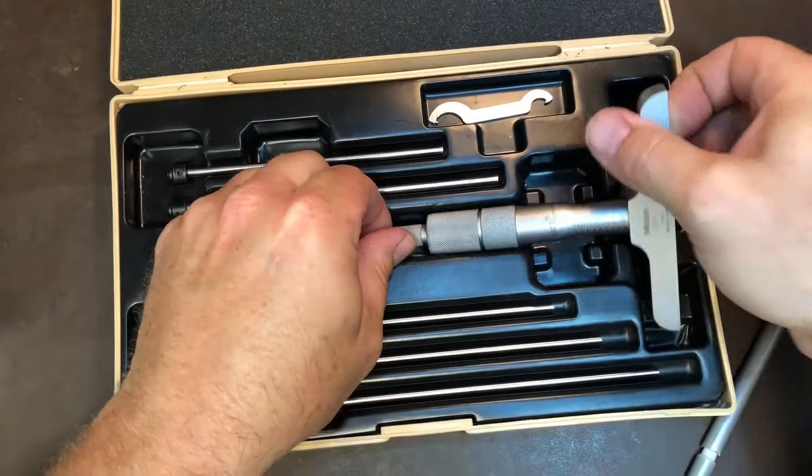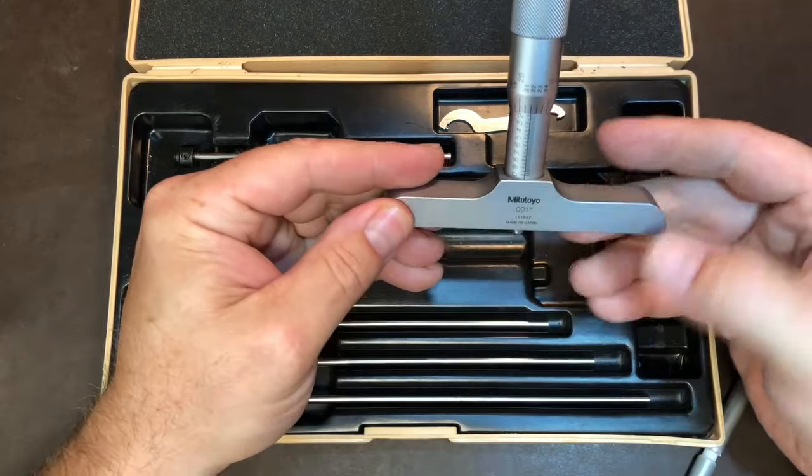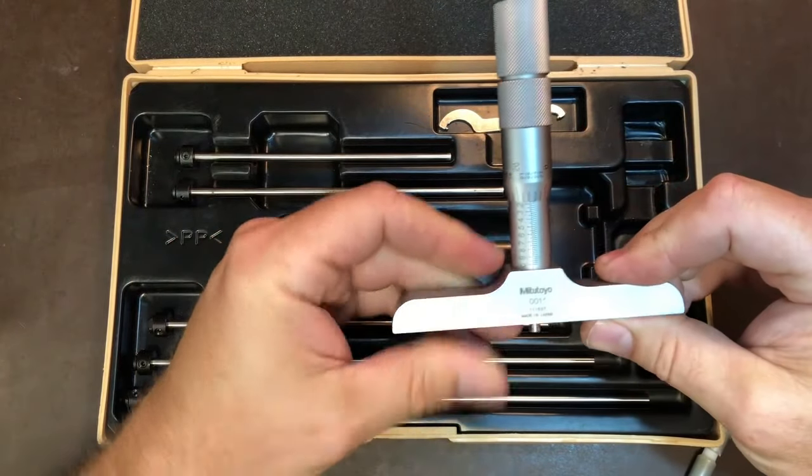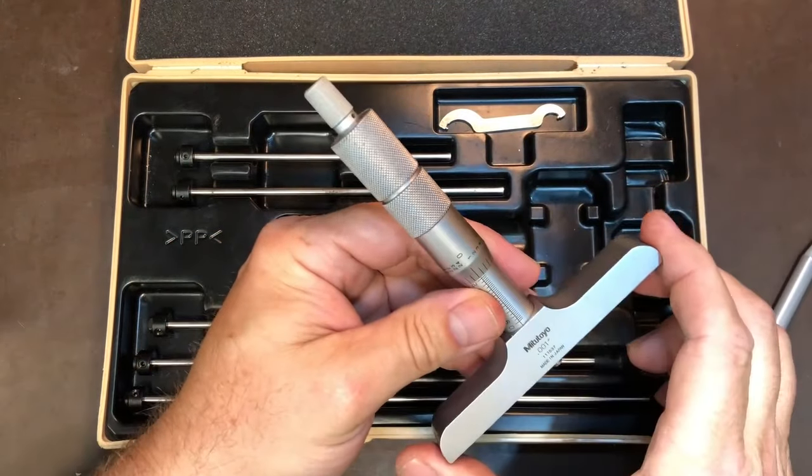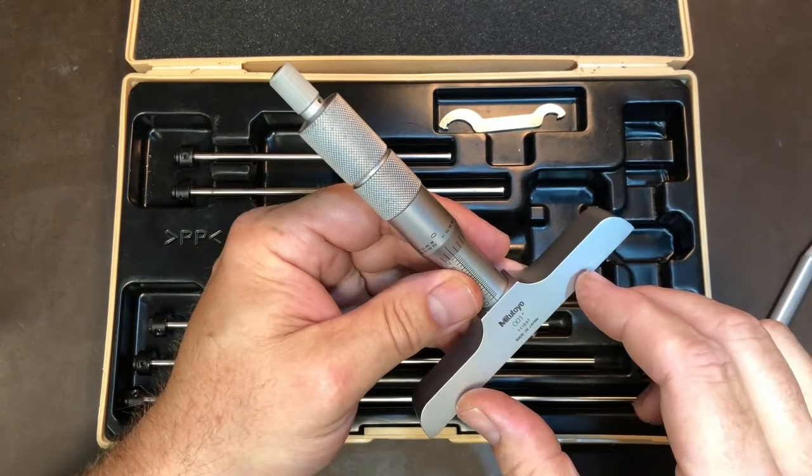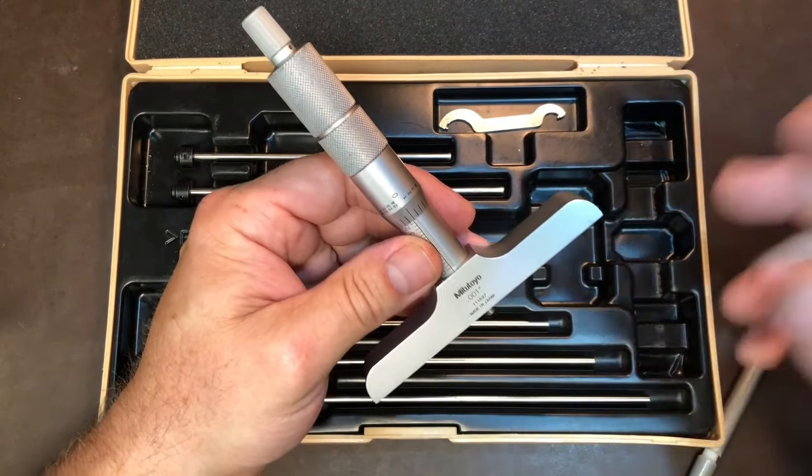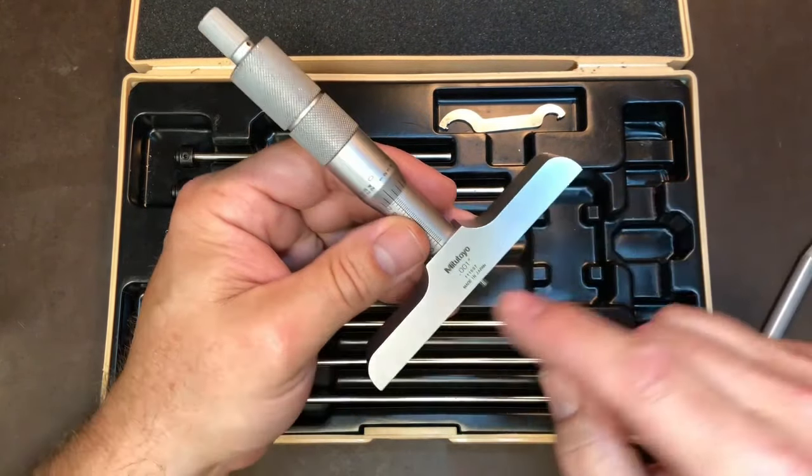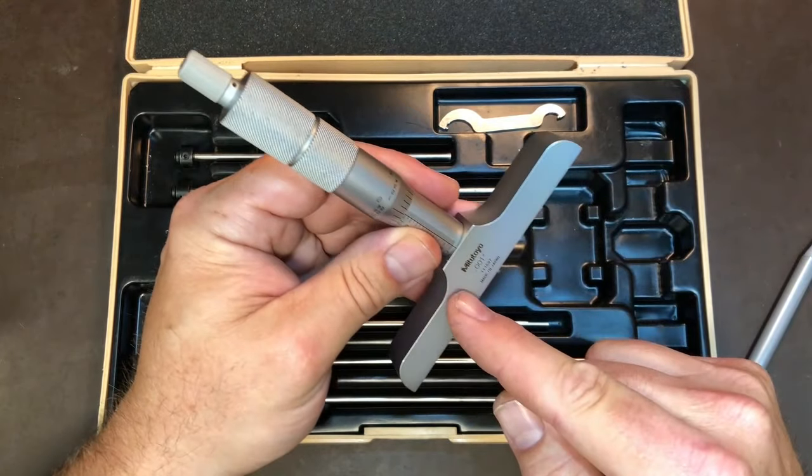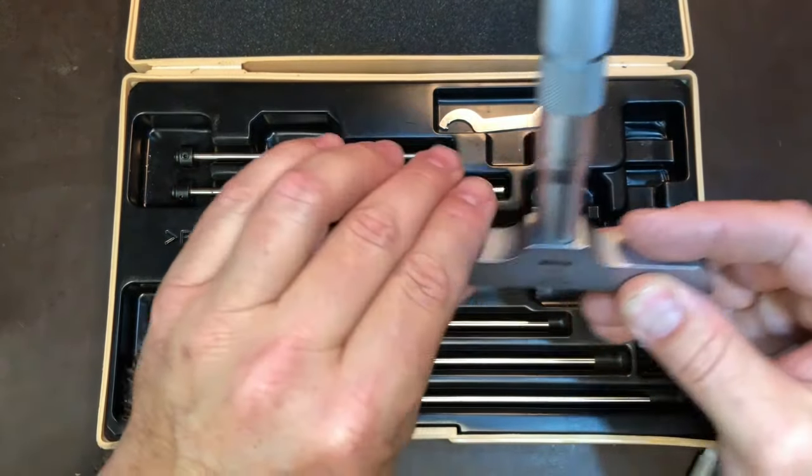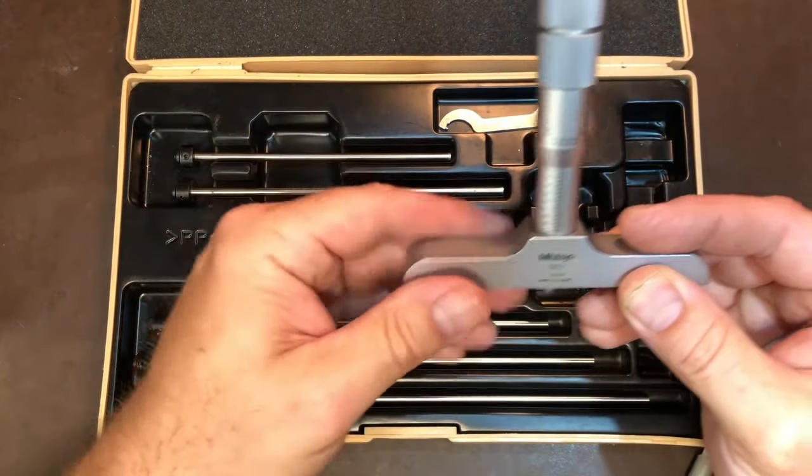What we have today is a Mitutoyo depth mic. It is a four inch base depth mic. You can get them in two inches and you can get something called, or we used to call it, one arm bandit where either you buy them with one arm or you would cut them off with one arm. It's to be able to get in closer to other objects.